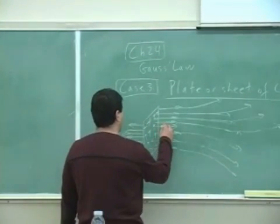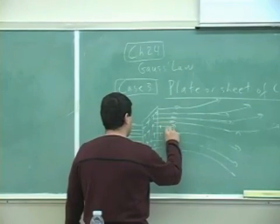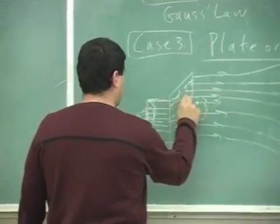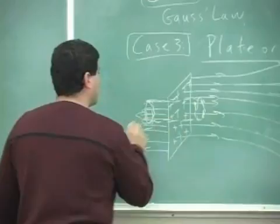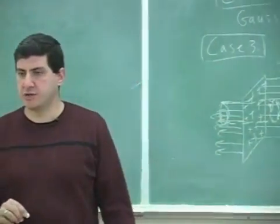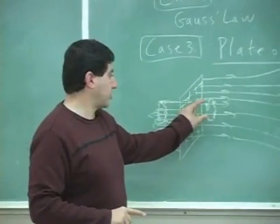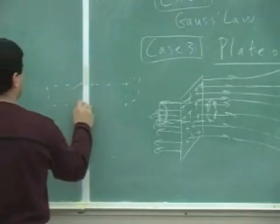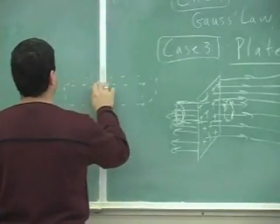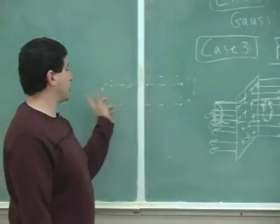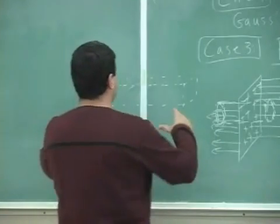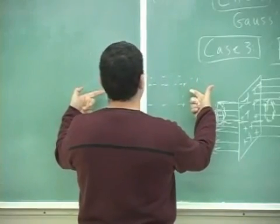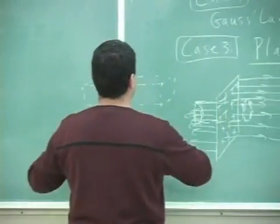So what we do is choose a Gaussian surface — a cylindrical Gaussian surface — and apply Gauss's law to it. It doesn't have to be cylindrical; it could be rectangular. The shape of the edges doesn't matter, as long as the Gaussian surface is straight and the two end faces are perpendicular to the electric field coming out.